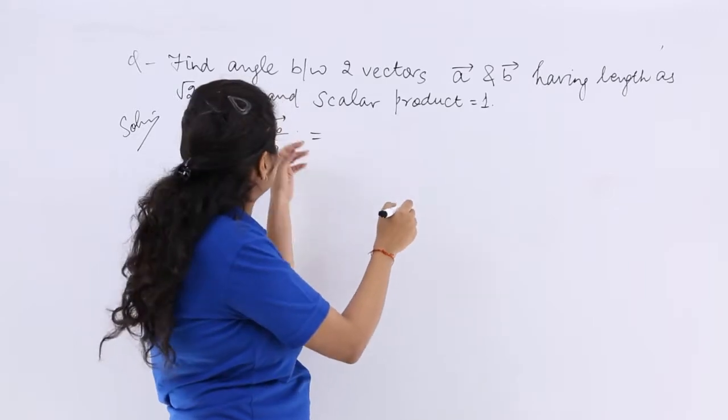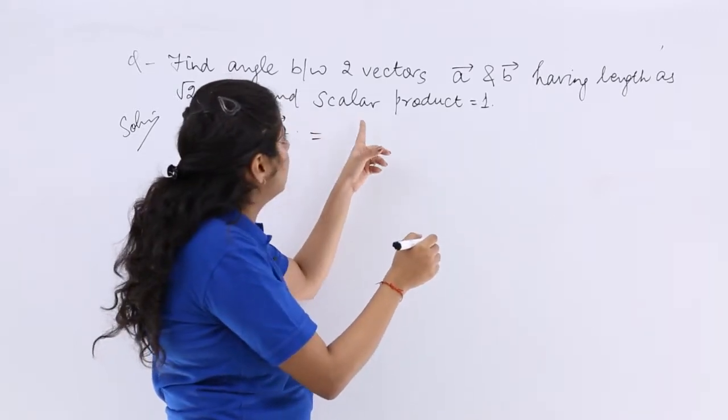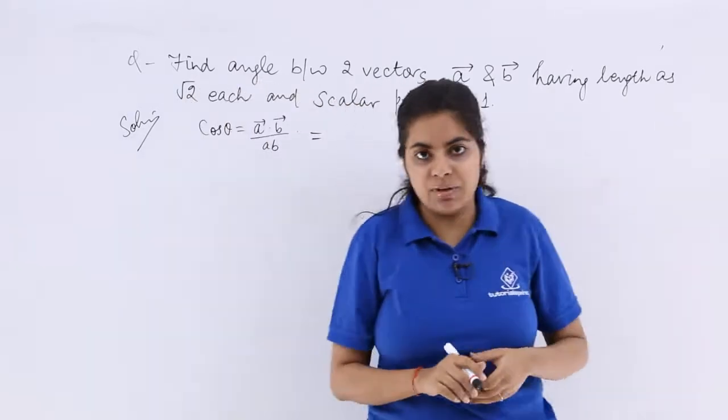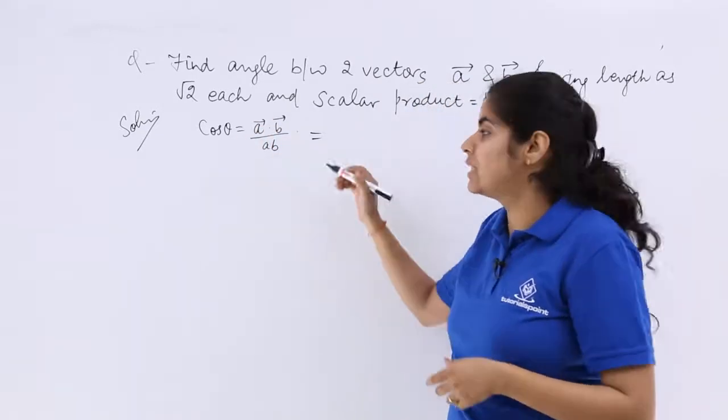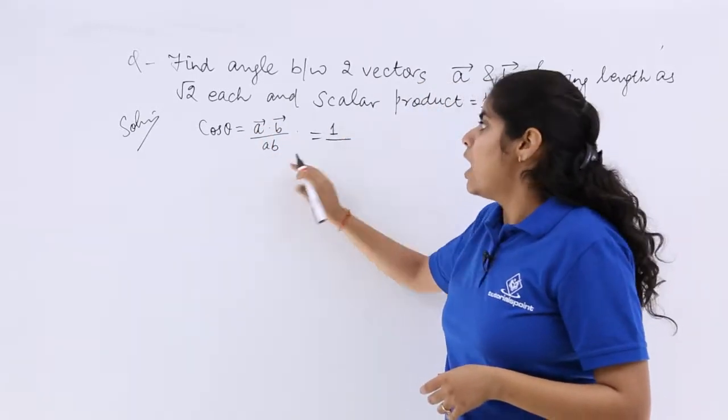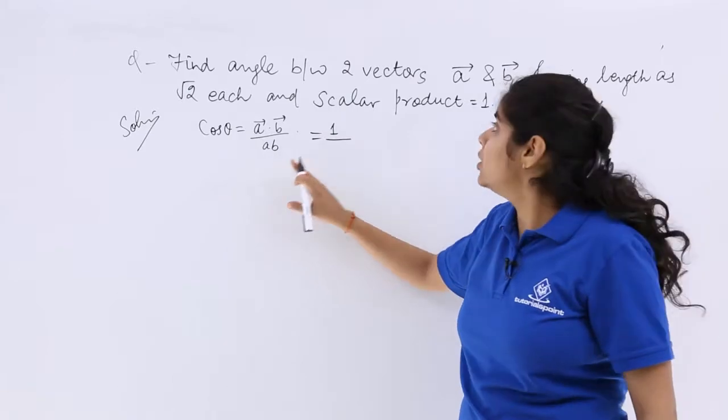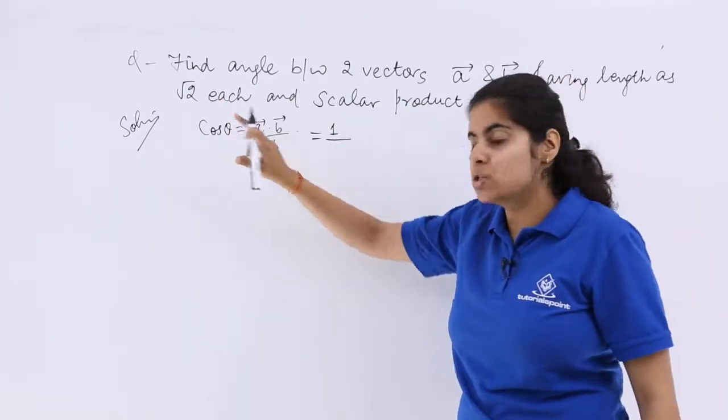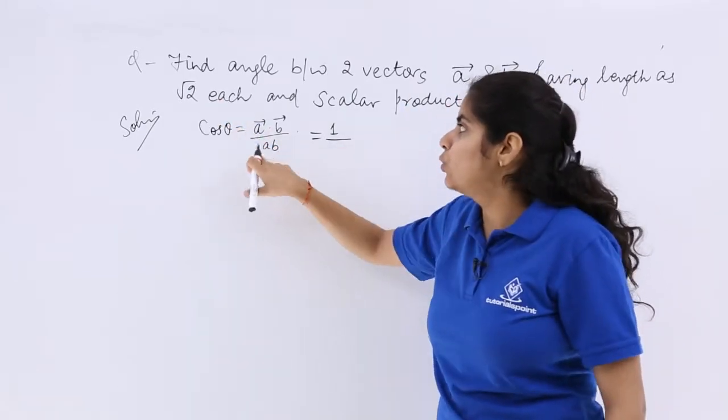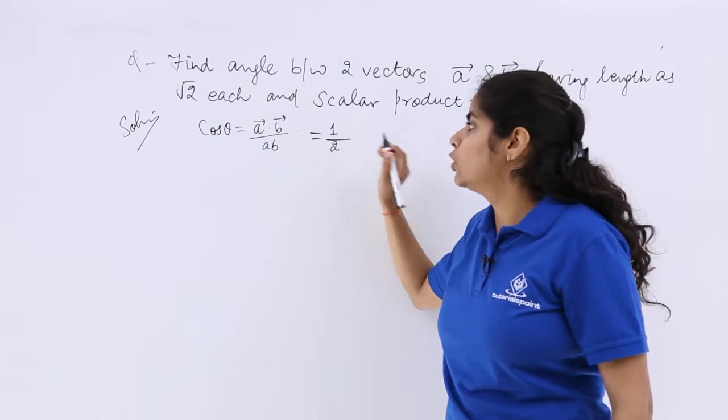So if the two vectors are there, root 2 each is the magnitude and the scalar product is 1. So that means a dot b is given to you as 1. Upon what are the magnitudes of each? You have the magnitudes as root 2 each. So root 2 multiplied by root 2 is 2.